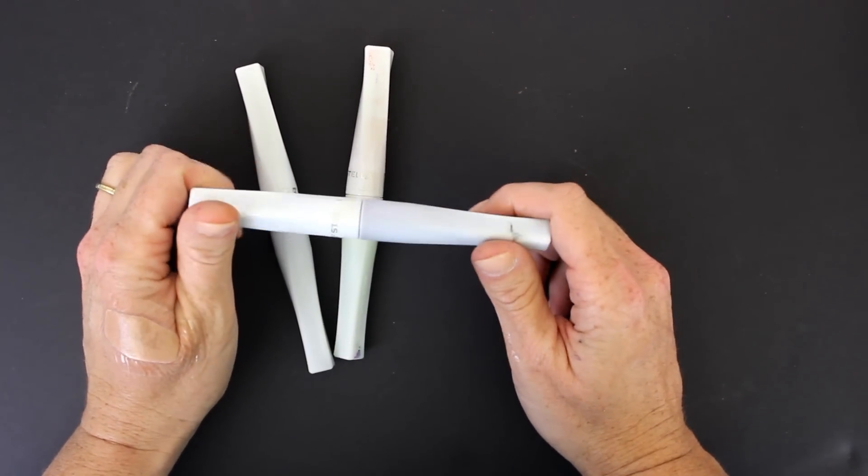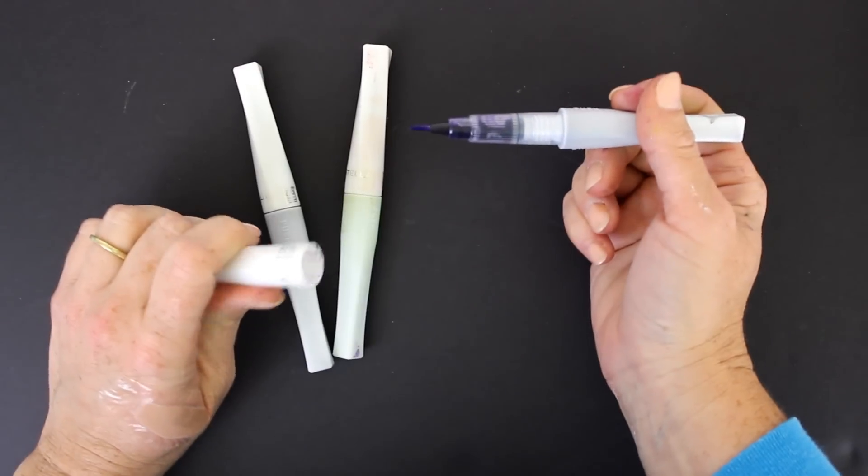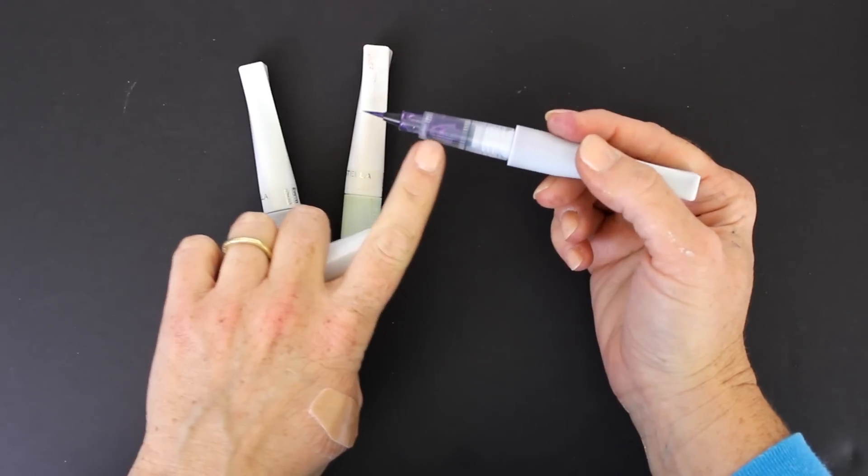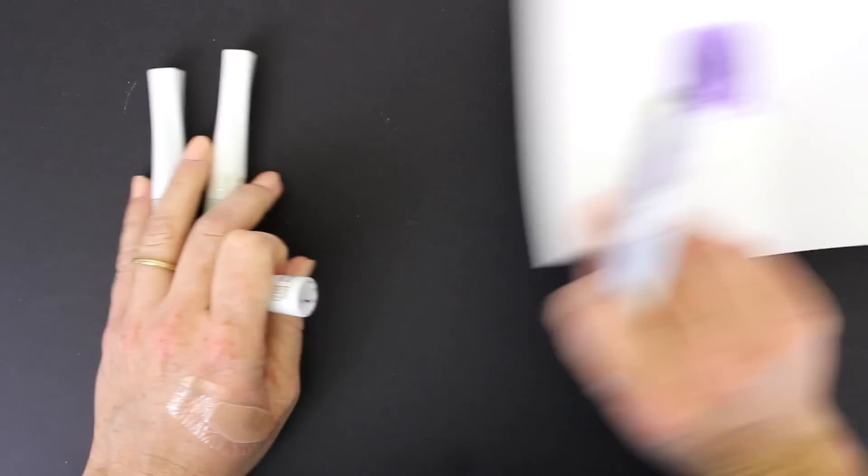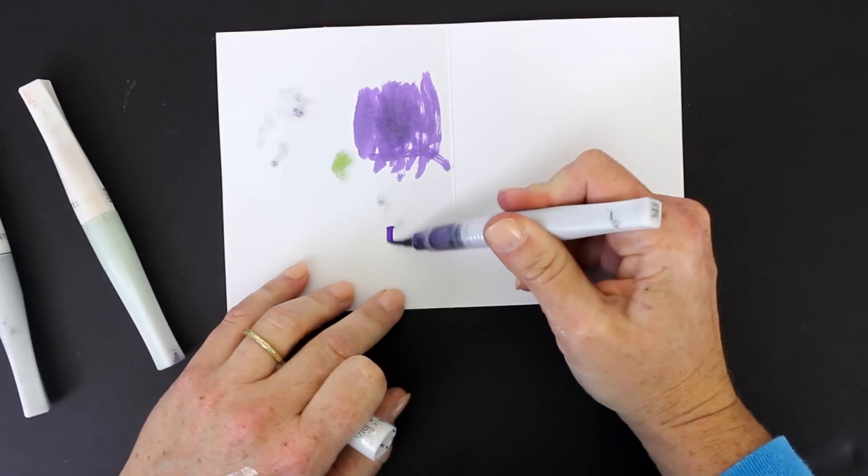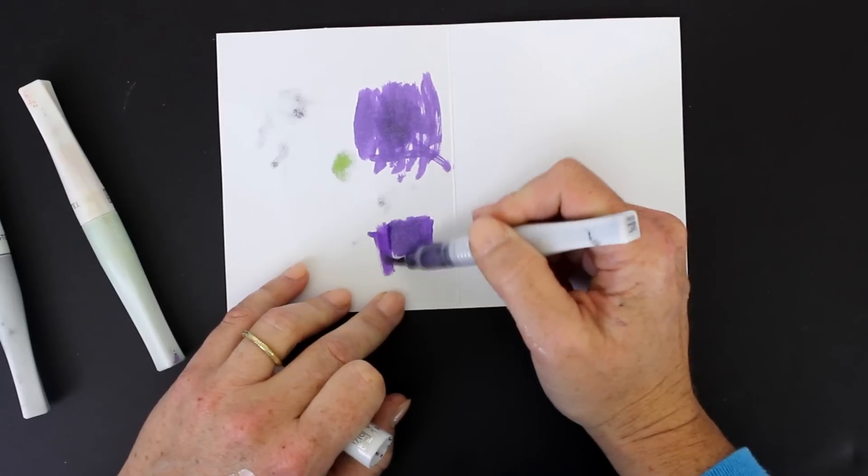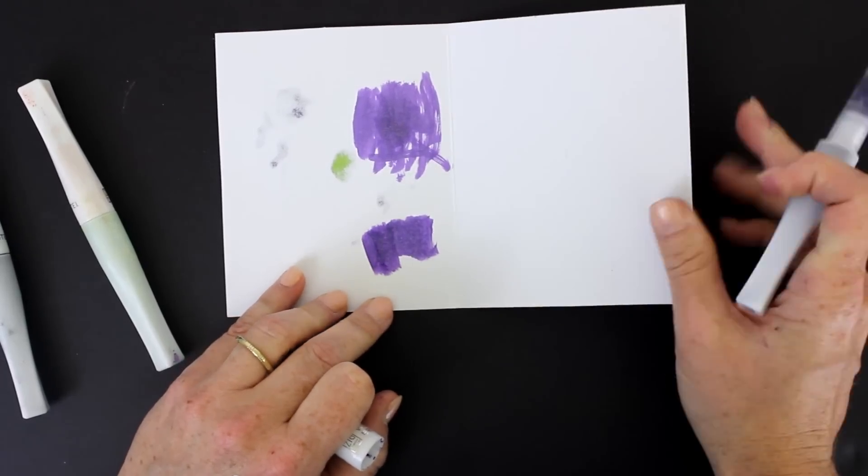They have a brush tip and once you get the paint flowing, you see it goes down into this cartridge. It applies almost like a Twinkling H2O—there's definitely pigment in it.